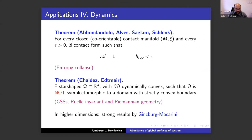Another result which also exploits global surfaces of section is by Julian Chaidez and Oliver Edtmayer: there are star-shaped domains in ℝ⁴ with dynamically convex boundary which are not symplectomorphic to a strictly convex domain. The proof uses many things including inequalities from Riemannian geometry, but also uses the notion of global surface of section to build the examples violating those inequalities.